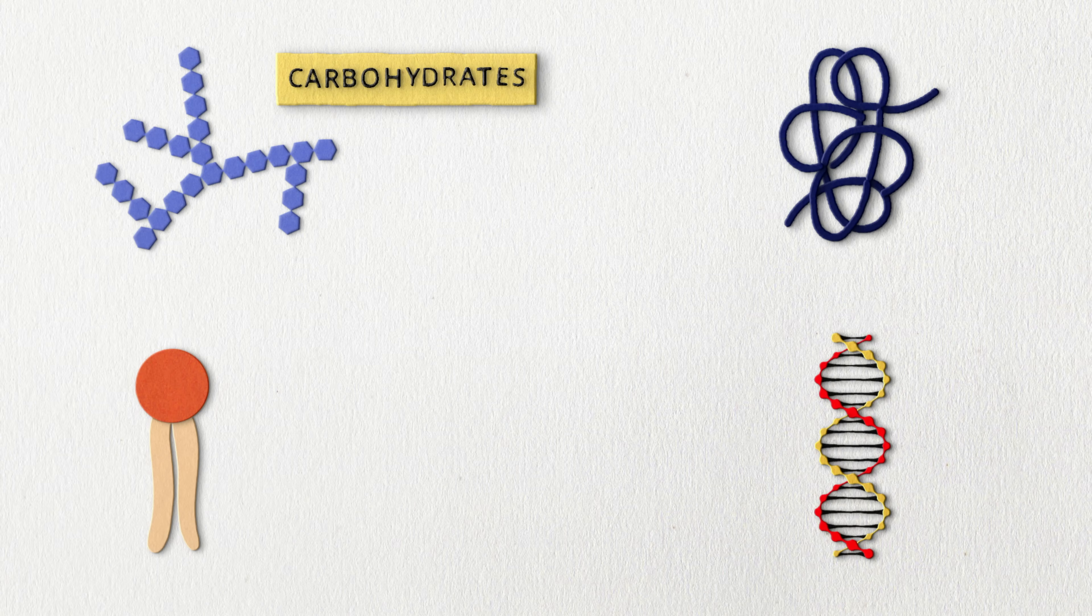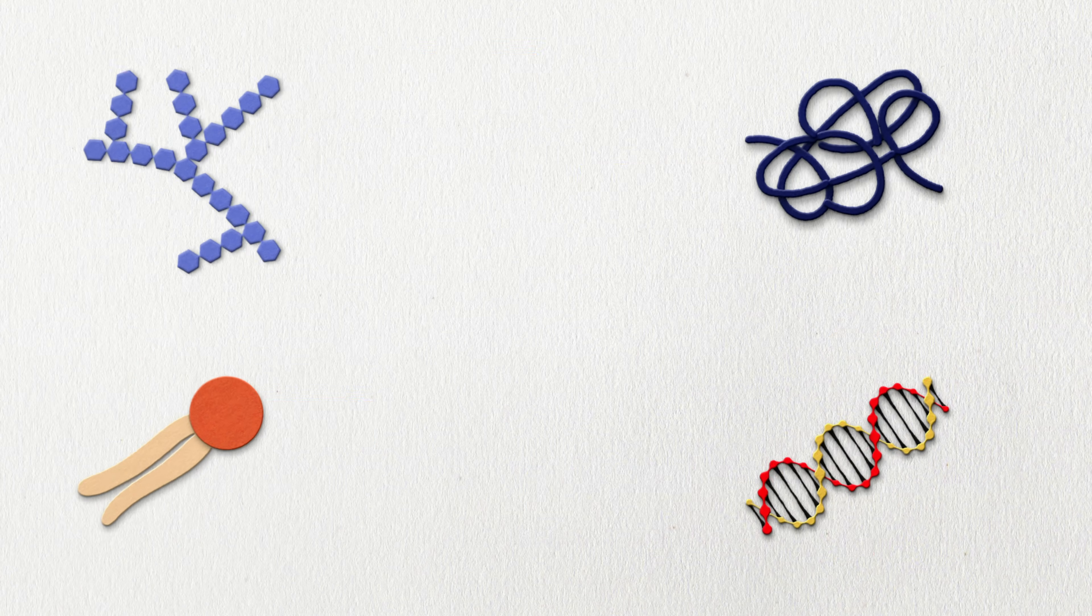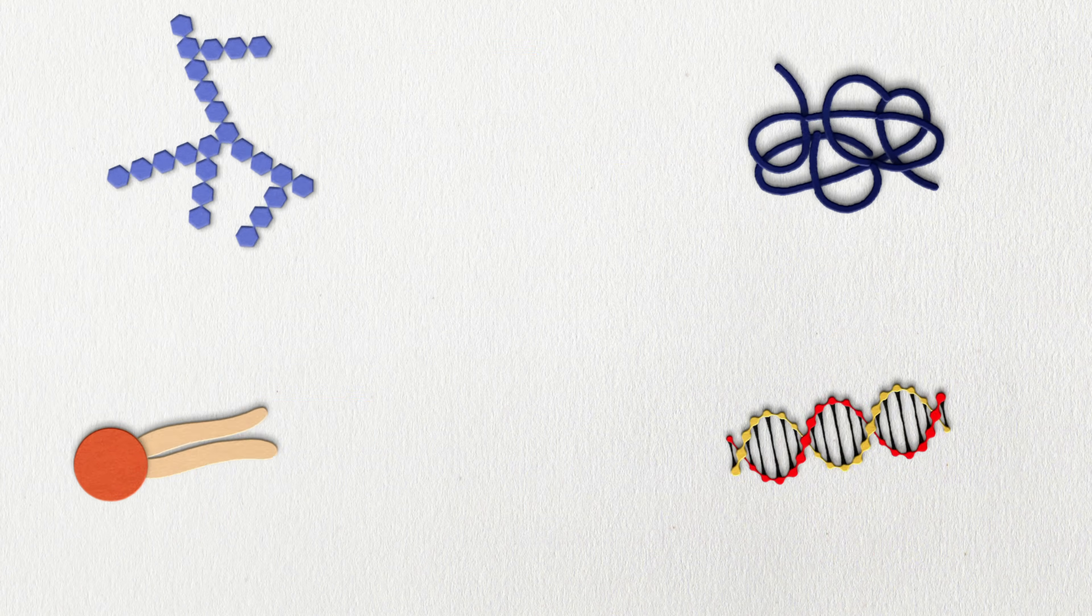We're talking about carbohydrates, lipids, proteins, and nucleic acids. Each of these types of organic molecules have monomers and polymers.